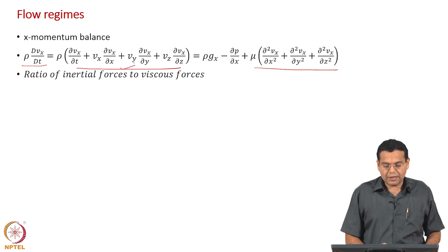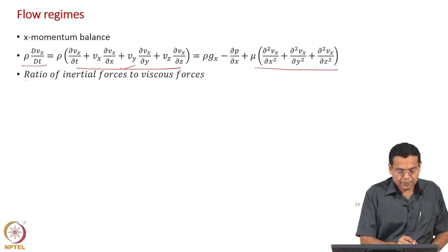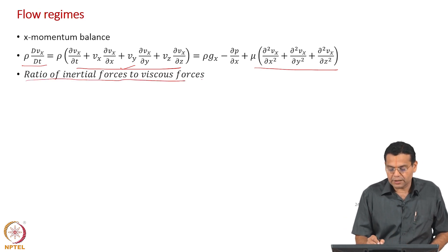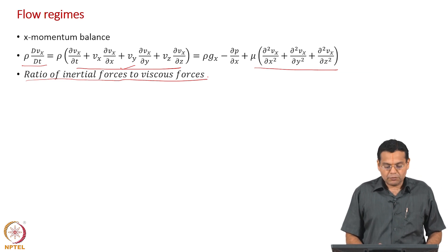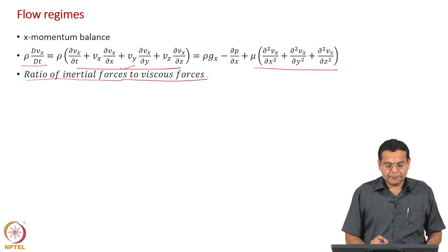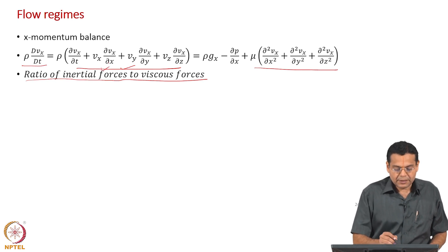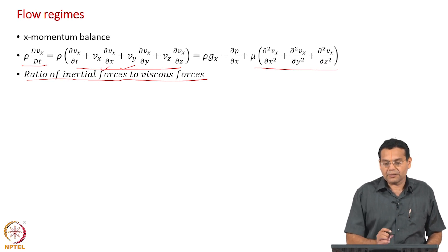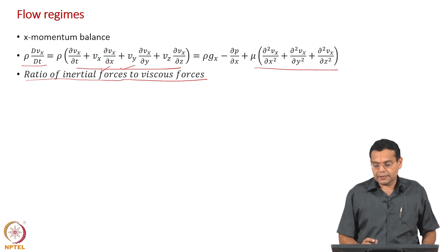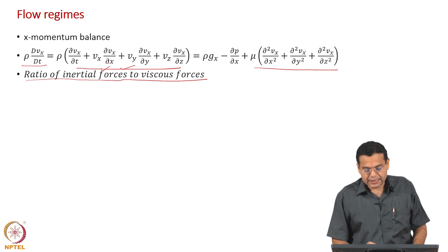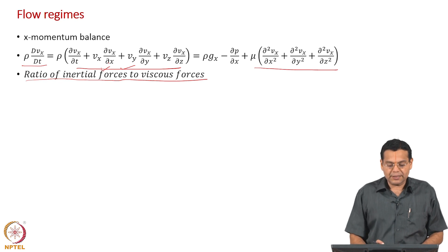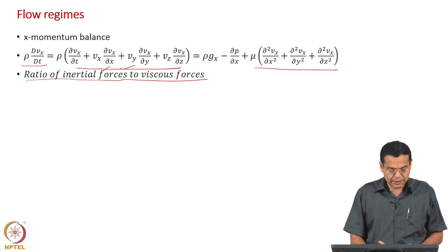So what we are going to do now is take the ratio of the inertial forces to the viscous forces. We take a representative term from the left-hand side and the viscous terms from the right-hand side and compute the ratio.